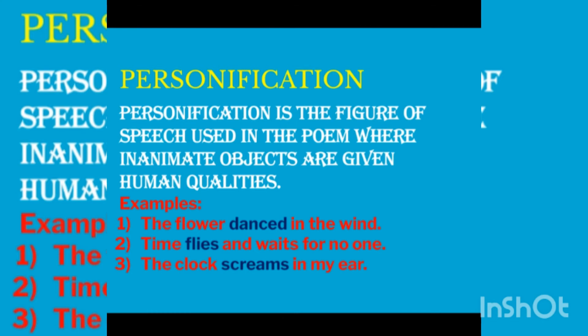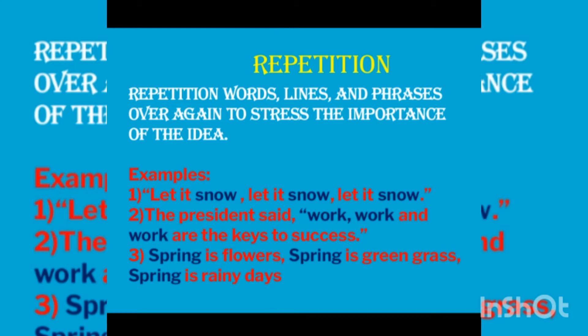Now the fourth figure of speech is repetition. Be clear — alliteration and repetition are different. In alliteration, only the beginning letter of the sound is repeated. Repetition means words, lines, and phrases are repeated over again to stress the importance of an idea. We repeat the same word or phrase twice or thrice to clarify or emphasize the idea.